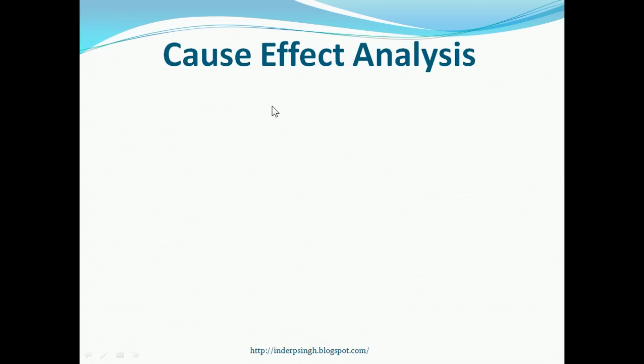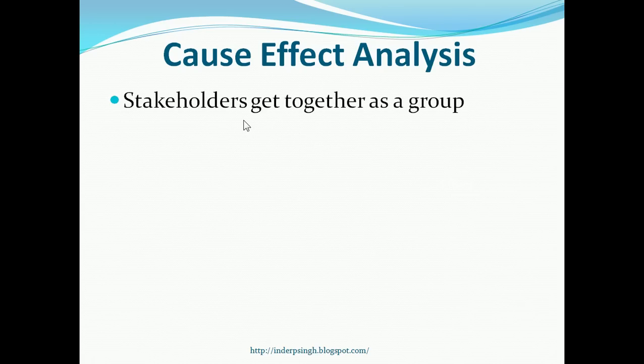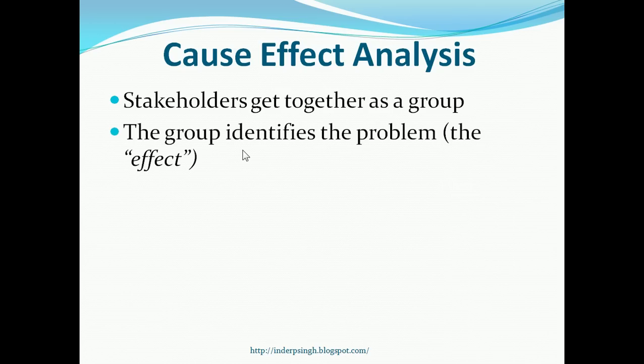Now, let us learn how the Cause-Effect Analysis is done with the help of an example. First, the stakeholders get together as a group. The group identifies the problem or the effect. Say, the application is slow.